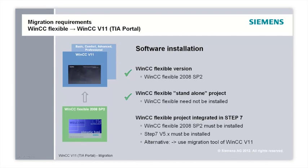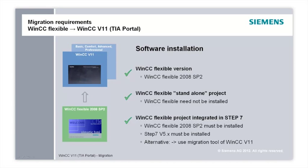When using a standalone project, WinCC flexible need not be installed on the computer for migrating the existing project to WinCC version 11. When using a WinCC flexible project integrated in Step 7, WinCC flexible and Step 7 must have been additionally installed on the computer in order to migrate the existing project to WinCC version 11. Alternatively, the migration tool can be used, which is available on the installation DVD of WinCC version 11 under Support.